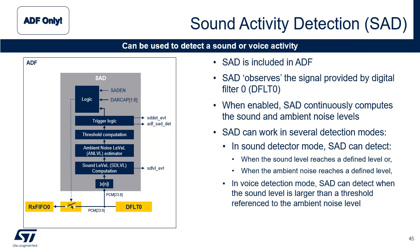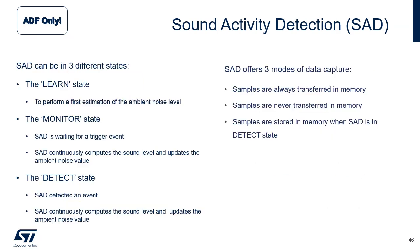SAD stands for Sound Activity Detection. The SAD function is offered by ADF. SAD can be used to observe the signal provided by digital filter 0. It's intended to be used for audio applications. When enabled, SAD continuously computes the sound and ambient noise levels. SAD can work in two different modes. In sound detector mode, SAD can detect when the sound level or the ambient noise reaches a defined threshold. In voice activity detector mode, SAD can detect when the sound level is larger than a threshold referenced into the ambient noise level. When enabled, SAD goes into the learn state. During this state, SAD performs a first estimation of the ambient noise level using successive values of the sound level.